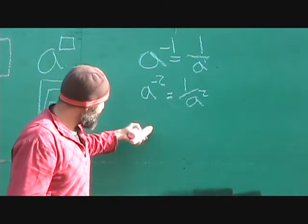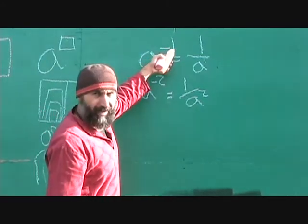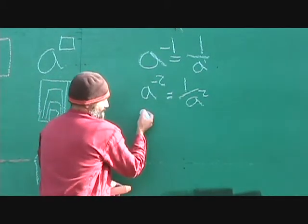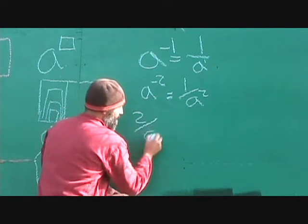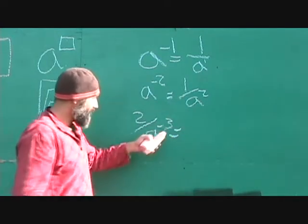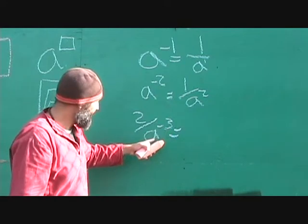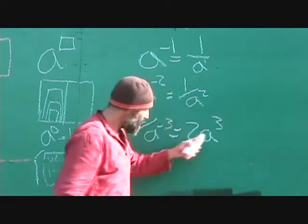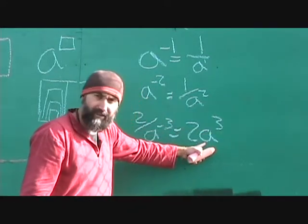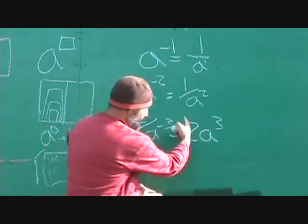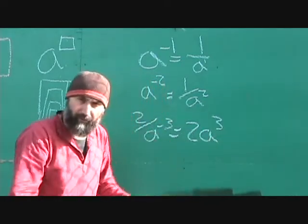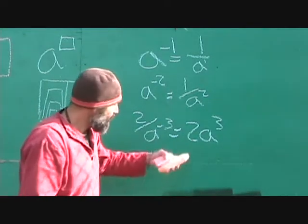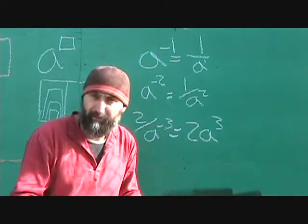It also works the other way around. If it's on top with a negative power, it kicks it down. If it's in the bottom with a negative power, it kicks it up. So if you had 2 over a to the negative 3, the negative power on the a kicks it up top. So this becomes 2 times a cubed. This cube only applies to the a because there's no bracket saying it applies to both. Keep track of your variables and numbers.